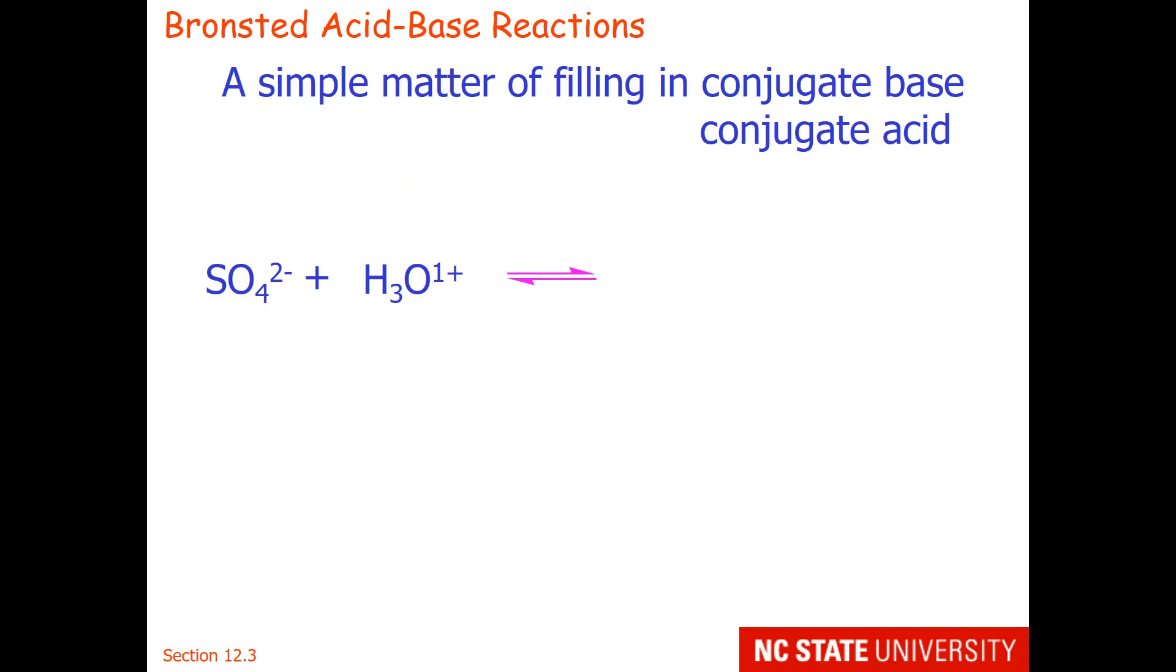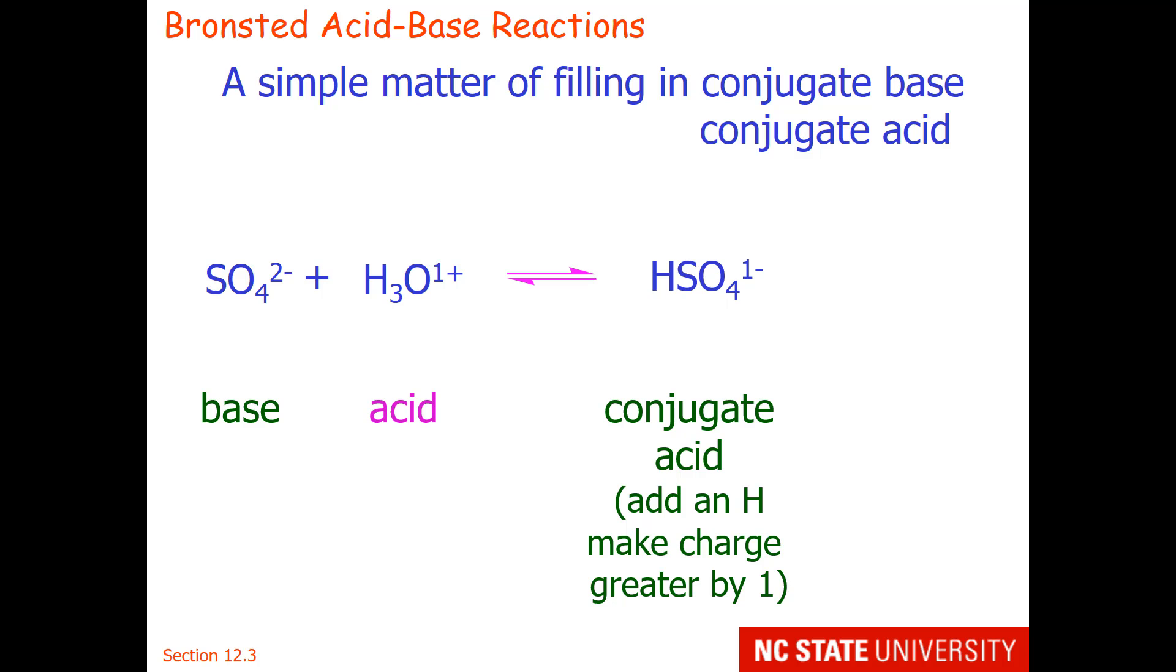Here is another example. Clearly the sulfate ion must be the base, and the hydronium ion must be the acid. So for the base, we write the conjugate acid. We are only moving one proton, so we will protonate, which means we add a hydrogen atom and make the charge greater by 1.